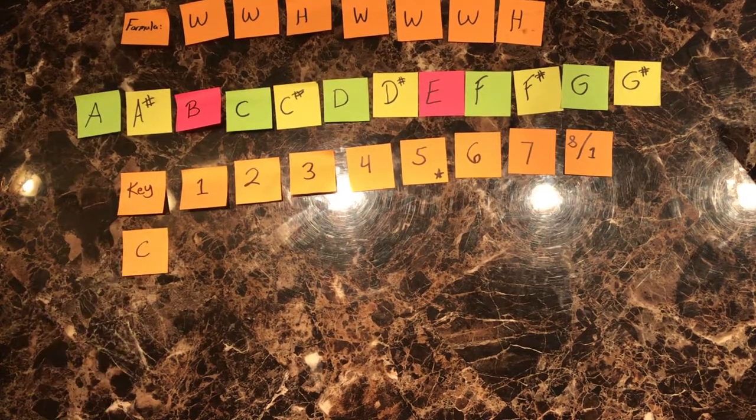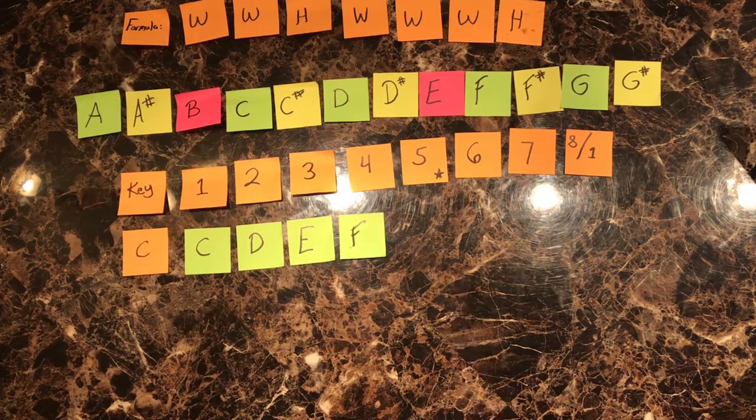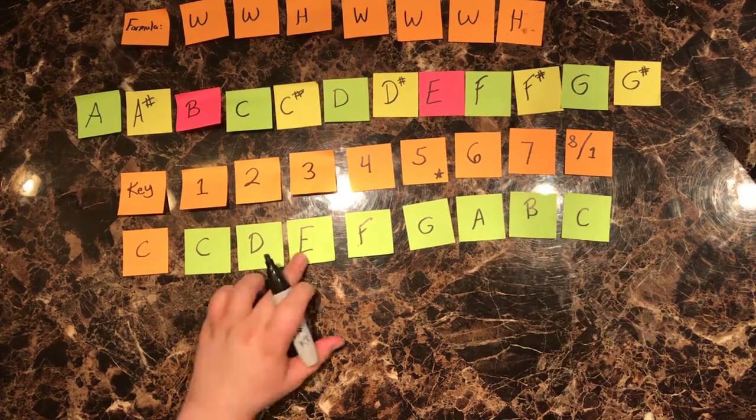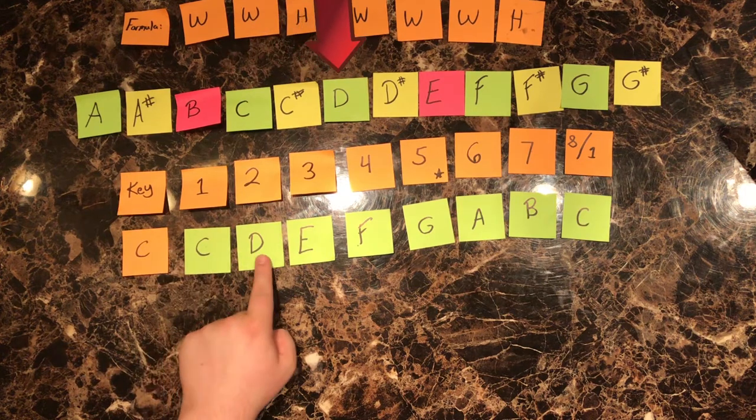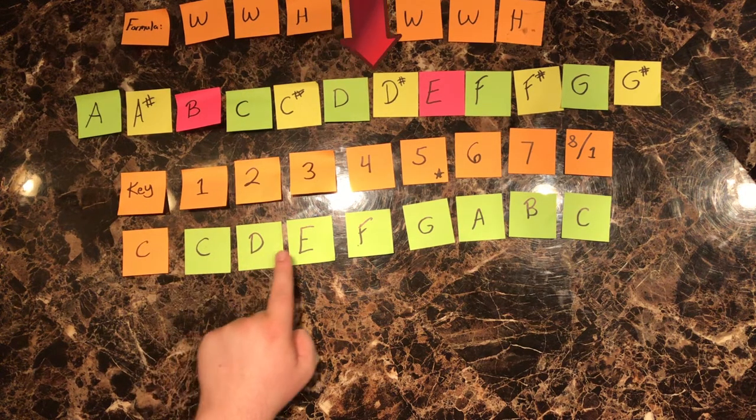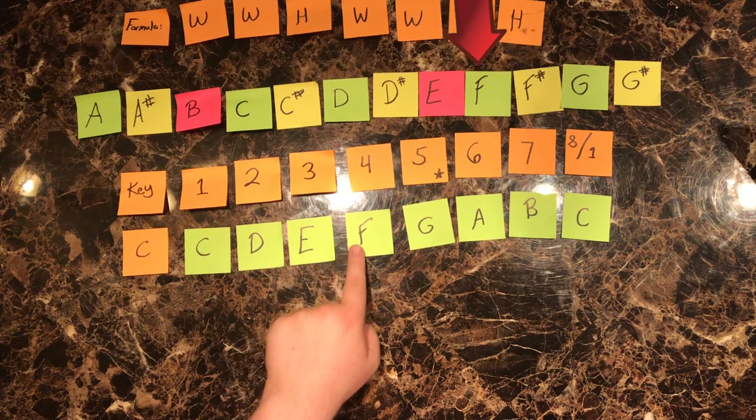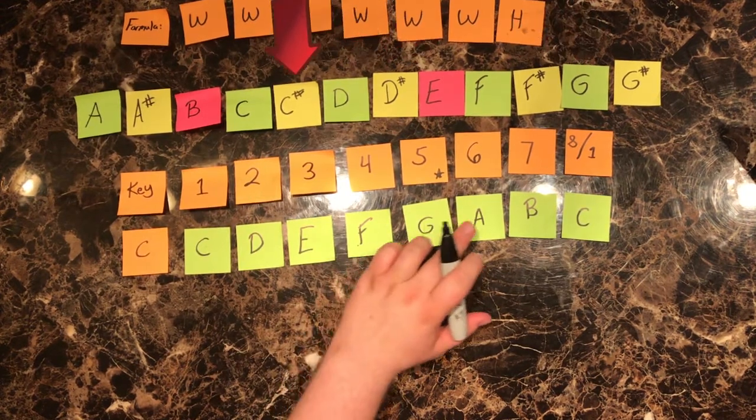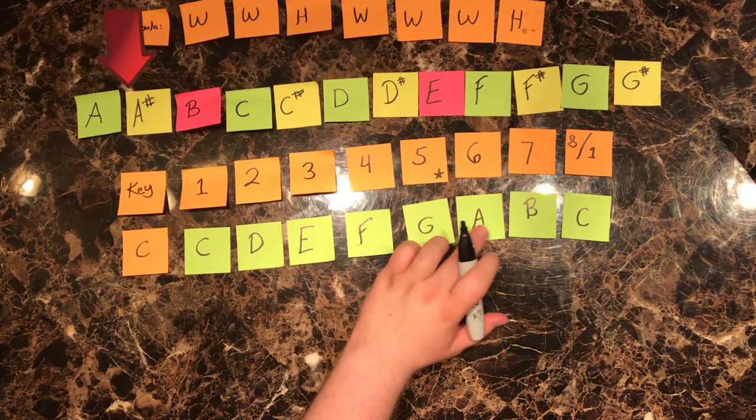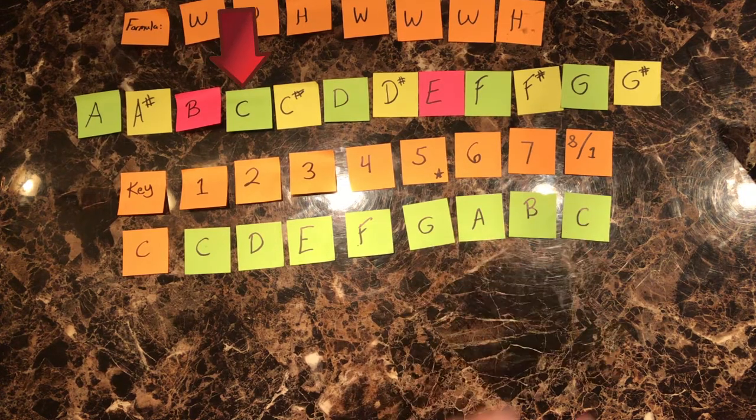We will start with the key of C, as it has no flats or sharps. That is going to go C, D, E, F, G, A, B, C. Starting on C, we move a whole step, two sticky notes, to D. From D, we move another whole step to E. From E, we move a half step, one sticky note, to F. From F, we move a whole step to G. From G, we move a whole step to A. From A, we move a whole step to B. And from B, we move a half step to C. And the scale is complete.